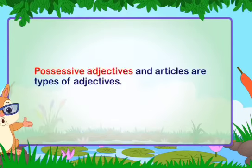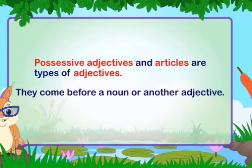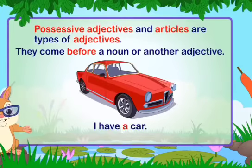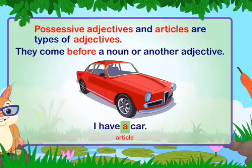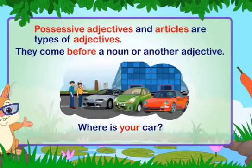Possessive adjectives and articles are types of adjectives. They come before a noun or another adjective. For example, 'I have a car' — here 'a' is used as an article. 'Where is your car?' — here 'your' is used as a possessive adjective.